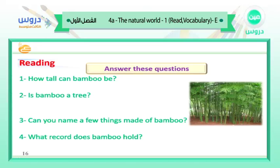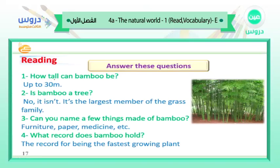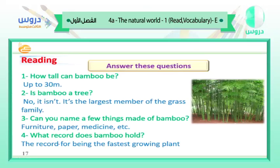Questions: how tall can bamboo be? Up to 30 meters — very tall. Is bamboo a tree? No, it isn't — it's the largest member of the grass family. Can you name a few things made of bamboo? Furniture, paper, medicine, etc. What record does bamboo hold? The record for being the fastest growing plant.